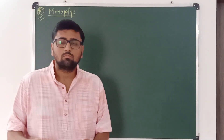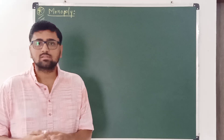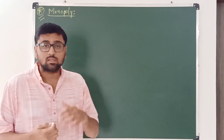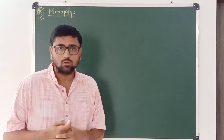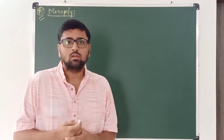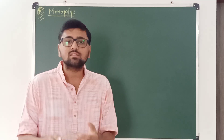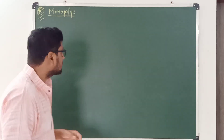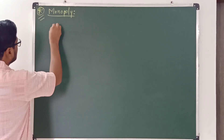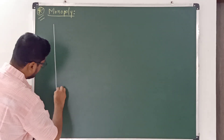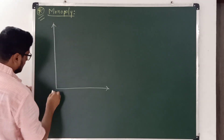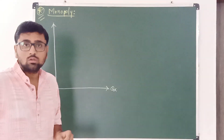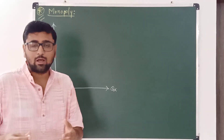The features of monopoly market and revenue were discussed in part 1. In part 2, I am going to discuss the profit-maximizing output of a monopoly, or what are the equilibrium conditions and how a monopolist achieves equilibrium in the short term. We know that the average revenue and marginal revenue curve of a monopoly are downward sloping.